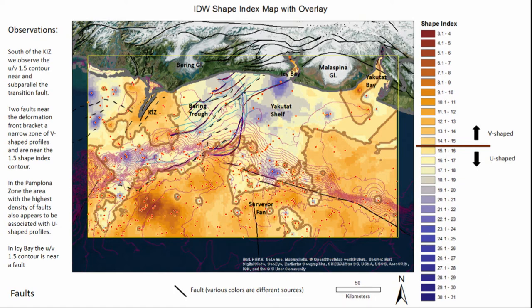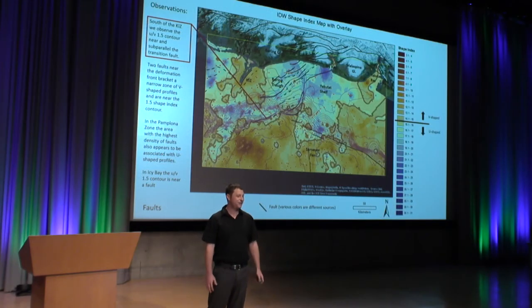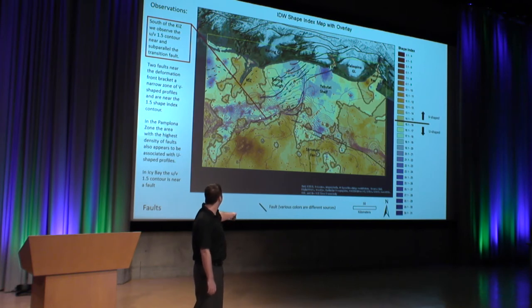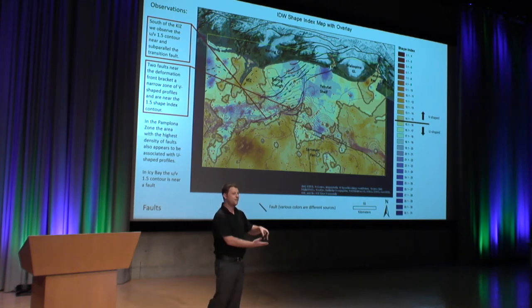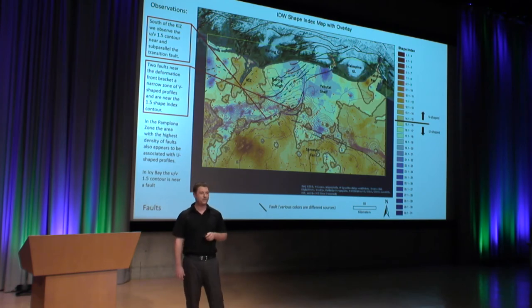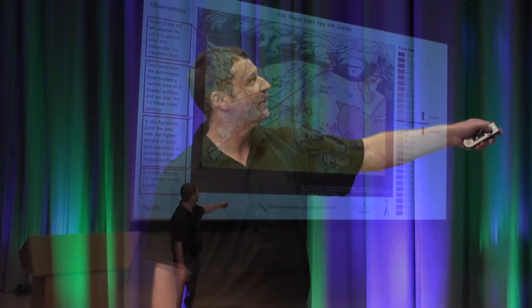With respect to faults: south of the Kayak Island Zone, we see really good agreement between the 1.5 UV contour and the transition fault, suggesting maybe there's some fault control on profile shapes. Near the deformation front of our sediment wedge, two faults bracket a narrow zone of V-shaped profiles near that 1.5 shape index contour. In the Pamplona Zone proper, the highest density of faults is also associated with more U-shaped profiles. And in Icy Bay, the 1.5 contour changes on either side of a fault — I believe some faults which appear not to continue across Icy Bay actually do.